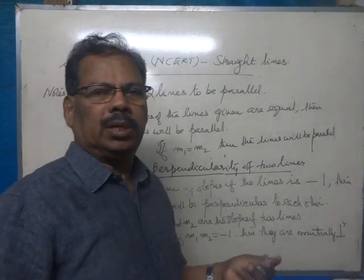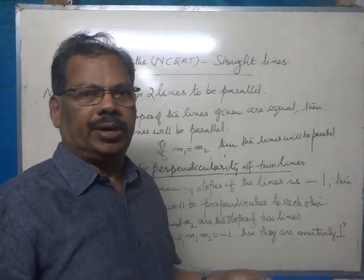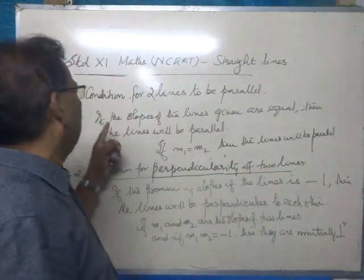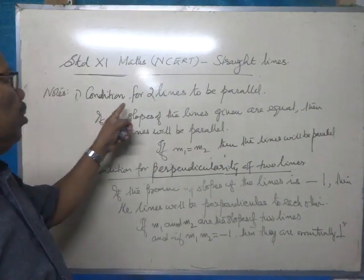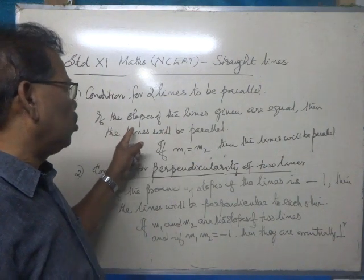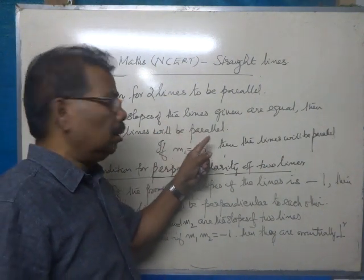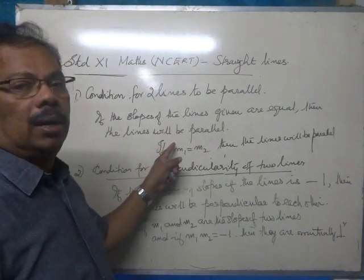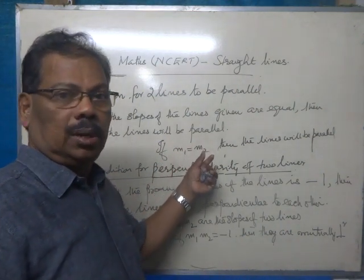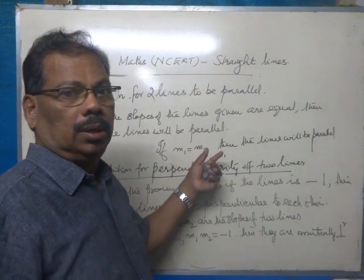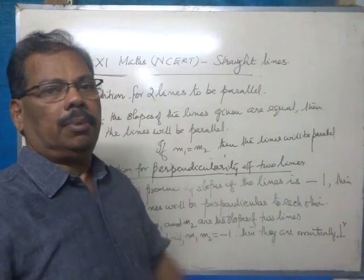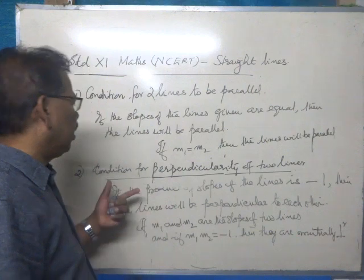Friends, we continue with mathematics — straight lines. Some notes: one condition for two lines to be parallel. If the slopes of the lines given are equal, then the lines will be parallel. Let the slopes be m1 and m2, then if m1 equals m2, the lines should be parallel.